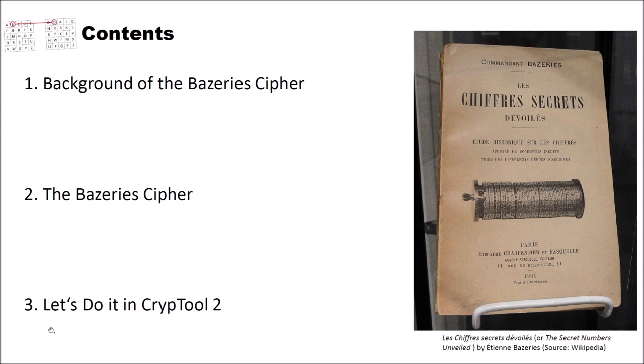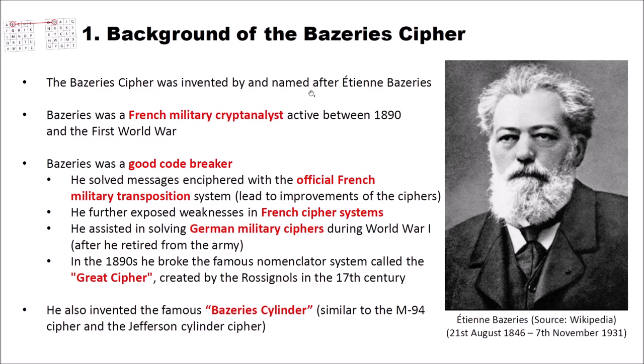The Bazeries cipher was invented by and named after Etienne Bazeries. Bazeries was a French military cryptanalyst active between 1890 and the First World War. You can see a picture of Etienne Bazeries here on the right side. This picture is from Wikipedia.